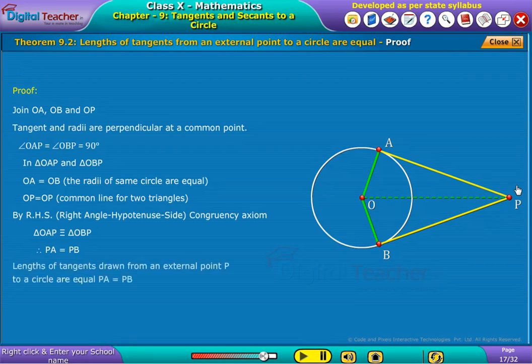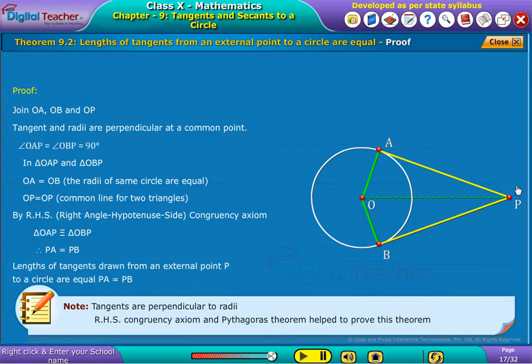Hence, it is proved that lengths of the tangents from an external point to a circle are equal. Note that tangents are perpendicular to radii or RHS congruency axiom and Pythagoras theorem help us to prove this theorem.